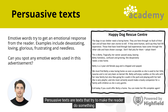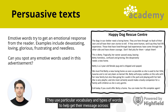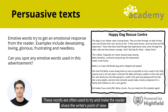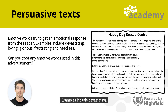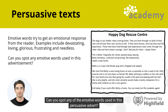Persuasive texts are texts that try to make the reader do something or think a certain way. They use particular vocabulary and types of words to help get their message across. Emotive words can be used to try and get an emotional response from the reader. These words are often used to try and make the reader share the writer's point of view. Examples include devastating, exciting, loving, glorious, frustrating, and needless. Can you spot any of the emotive words used in this persuasive advert?